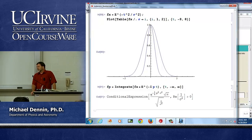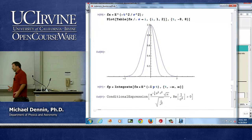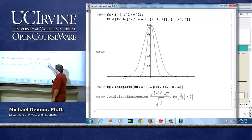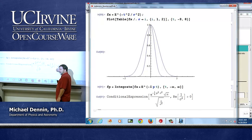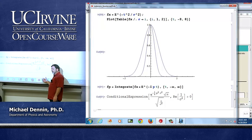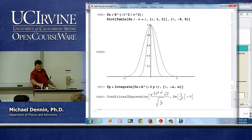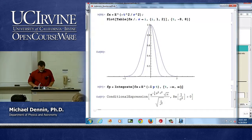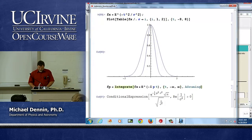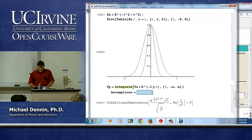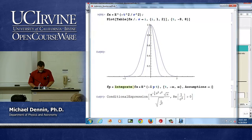Oh shoot! I got a conditional expression. This is going to happen to you a lot when you start doing more complicated integrals. What is it telling me? Well, it's this funny thing if the real part of this is greater than zero. Well, I happen to know sigma squared by definition is a real number and sigma itself is positive. So I can make this look much nicer by just going back and giving it the assumptions that sigma is greater than zero.